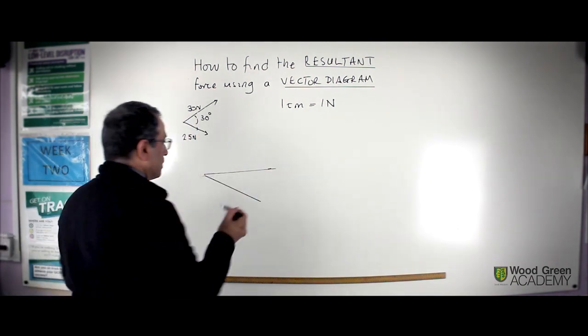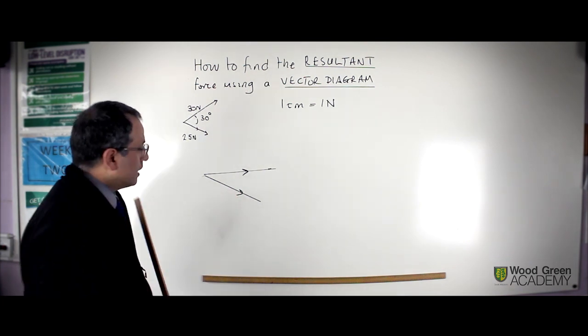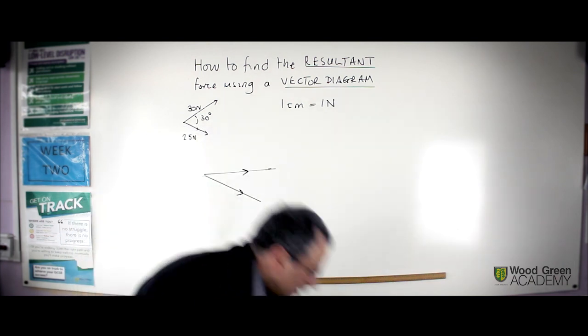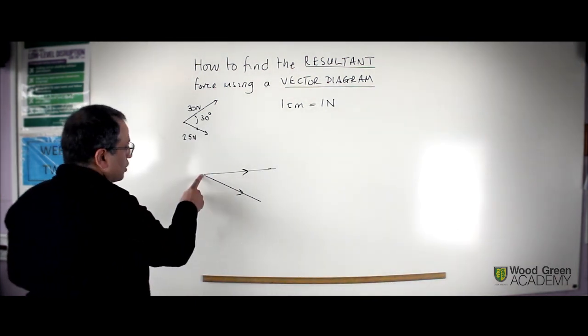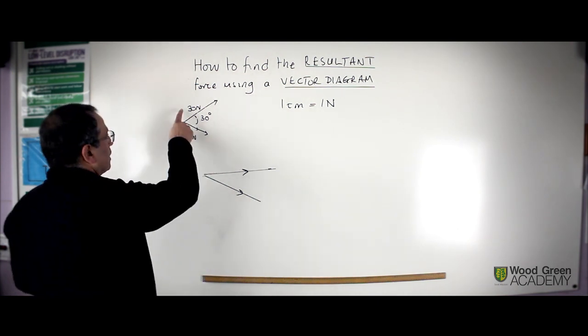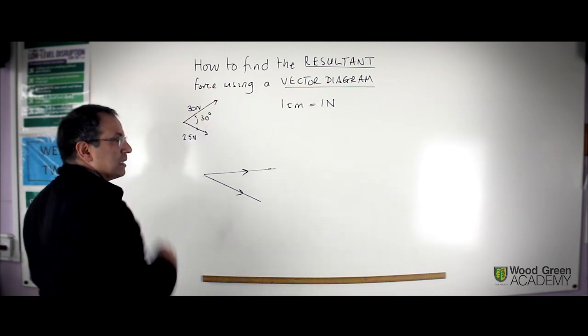Right, it's the next part, which in fact is the tricky part. And that is, what you need to do now, is to take a compass, and if this is your 25 N force, draw an arc 30 cm long.